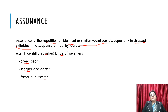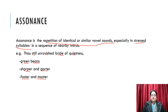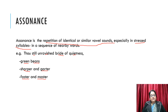Whereas in alliteration, consonant sound is repeated. So the basic difference is that in alliteration there is a repetition of consonant sound, whereas in assonance there is a repetition of vowel sound.